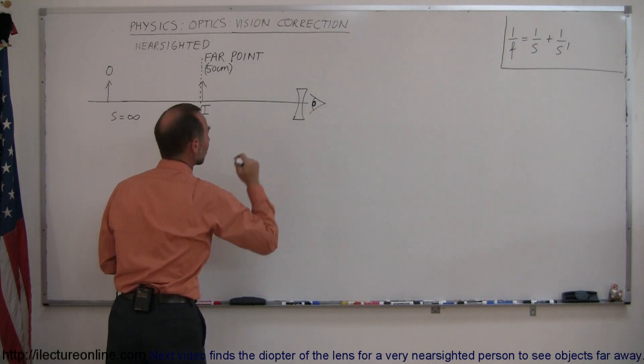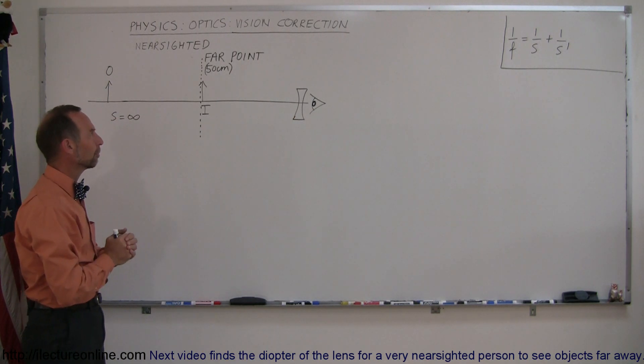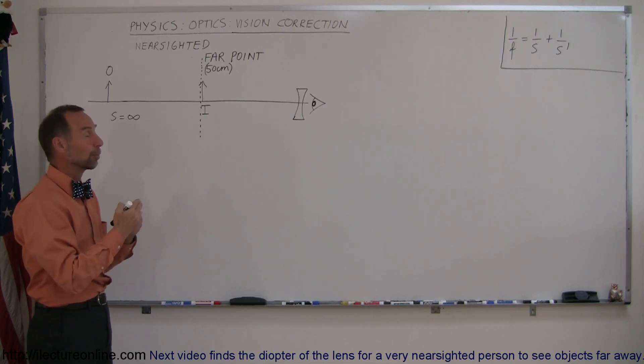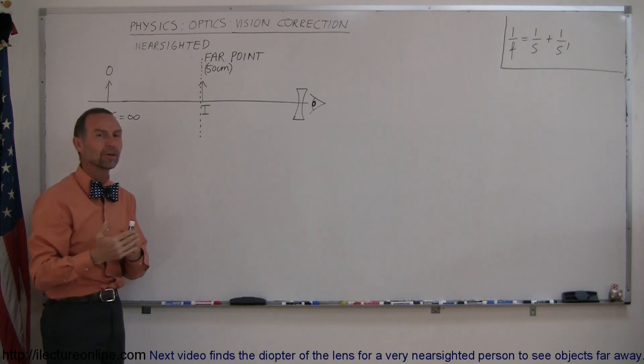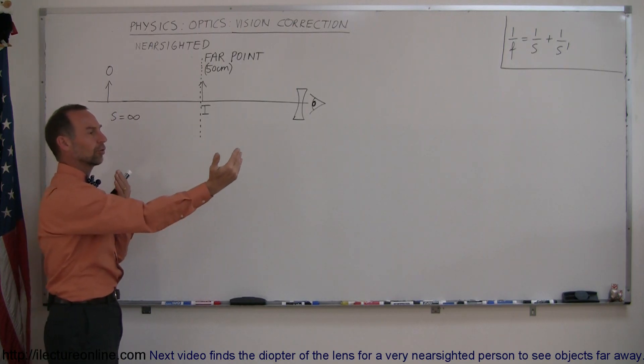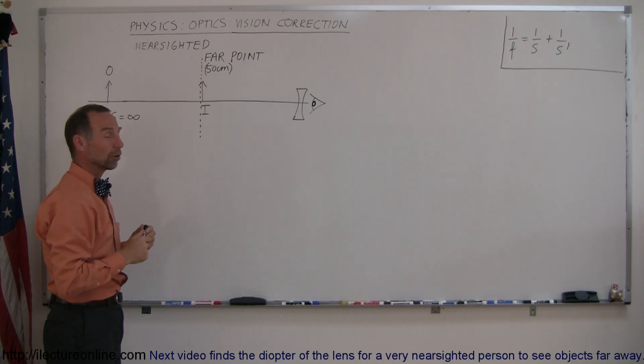Here's a person. This person is nearsighted, which means they have a far point. A far point is the farthest point that the person can see things clearly, and in this case it's 50 centimeters, which is just a little bit shy of two feet. So the farthest the person can see clearly is this far; anything beyond that becomes unfocused.